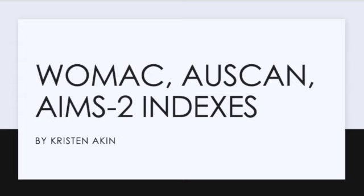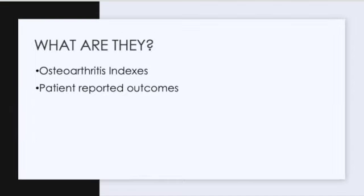Hi guys. Today I'll be talking about the WOMAC, OSCAN, and EAMS II indexes. They are osteoarthritis indexes and all patient-reported outcomes. We've seen several examples of patient-reported outcomes already, so I'm not going to get into that too much.